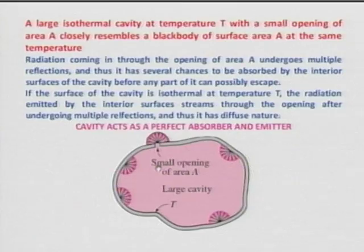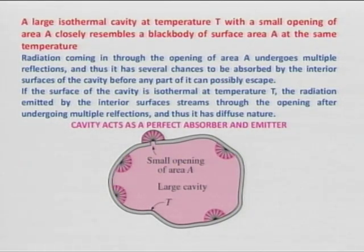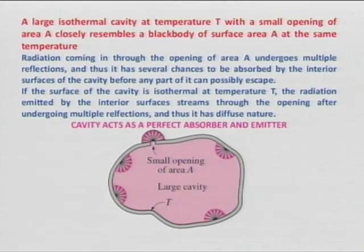We will move on to another controversial concept: how can I get a perfect black body? A perfect black body emits and absorbs perfectly. The visualization is: if I have a cavity with a small hole, whatever radiation comes in undergoes multiple reflections and is eventually absorbed. Conversely, radiation undergoing multiple reflections inside must exit through the hole. That is how an isothermal cavity with a small opening can be taken as a perfect black body.